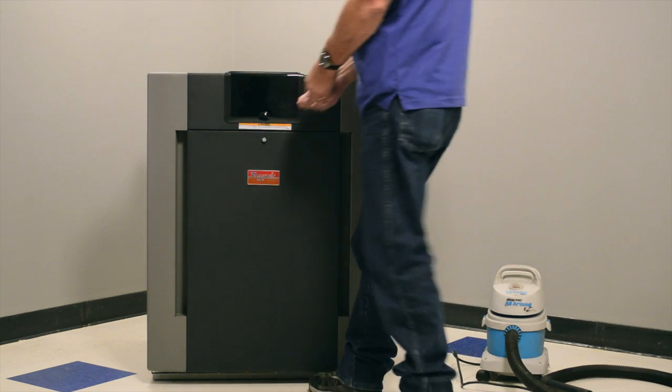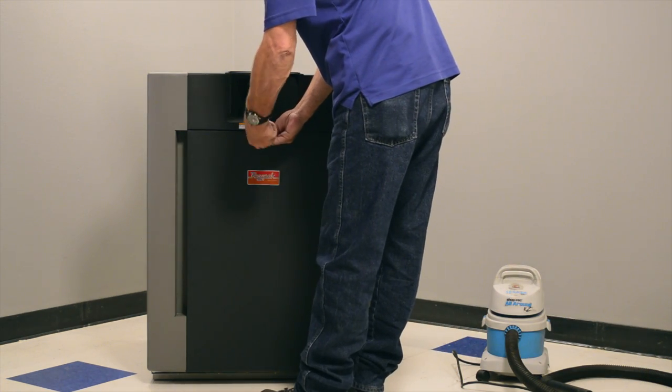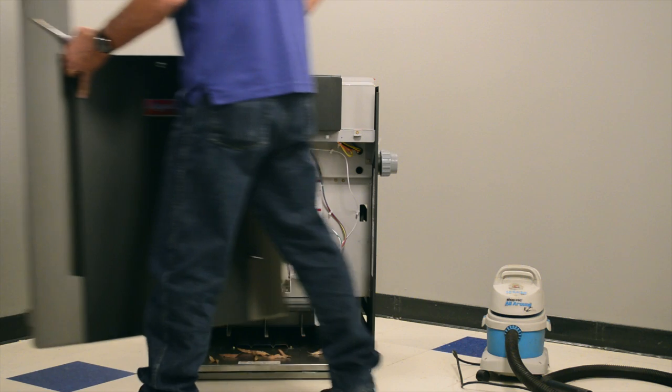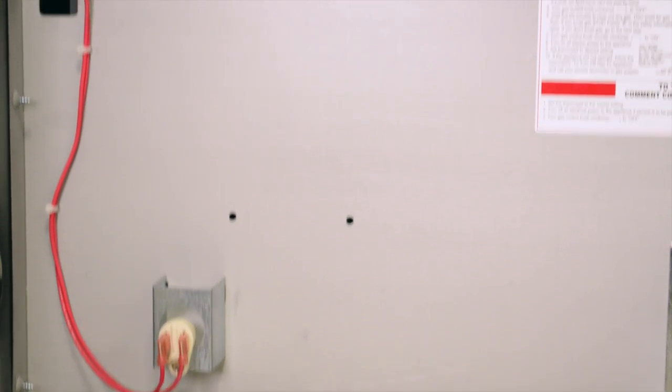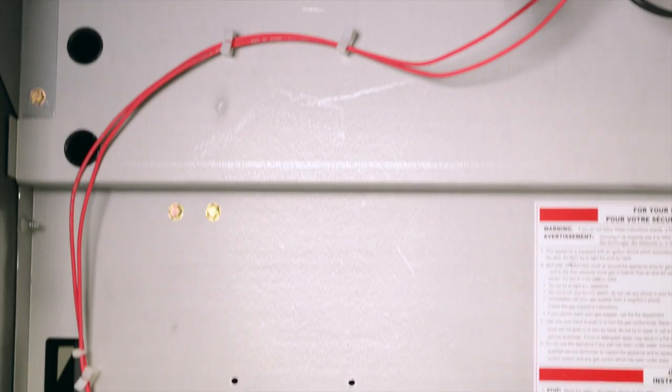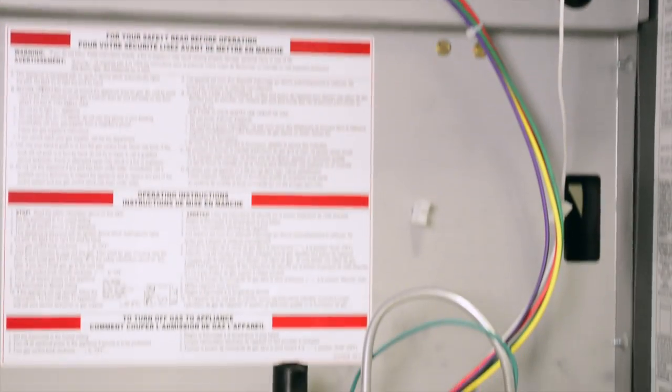Using the flat blade screwdriver, remove the knurled thumb screw on the door assembly. Pull the door assembly off and set it aside. Make sure the wires are not melted, pinched, cut, or chewed. Visually check to make sure the wire connections are snug.